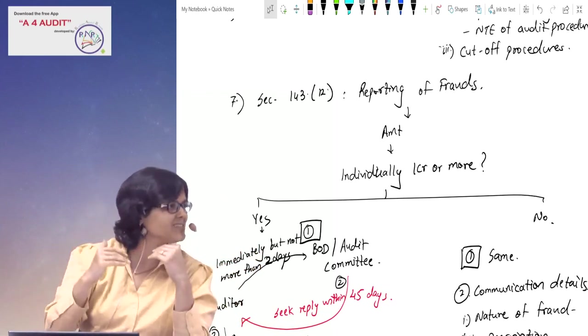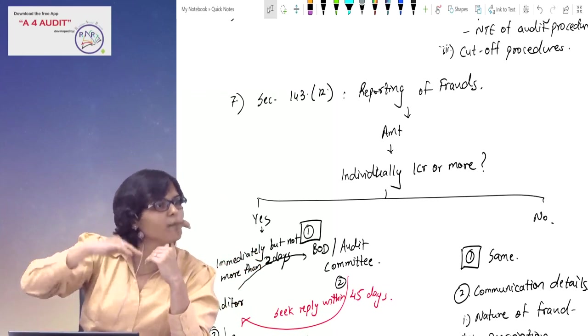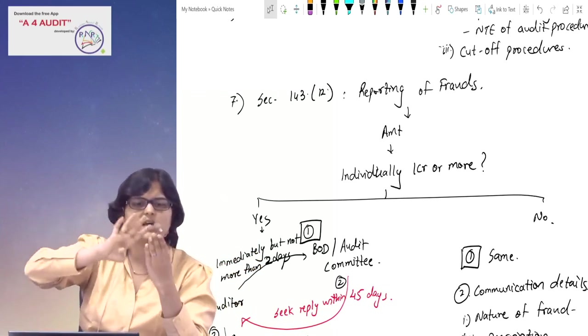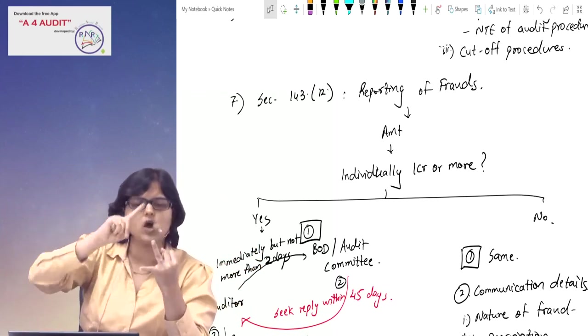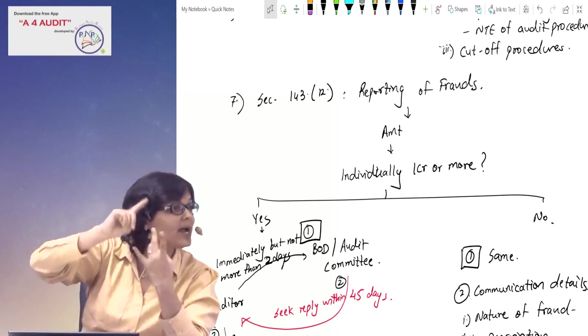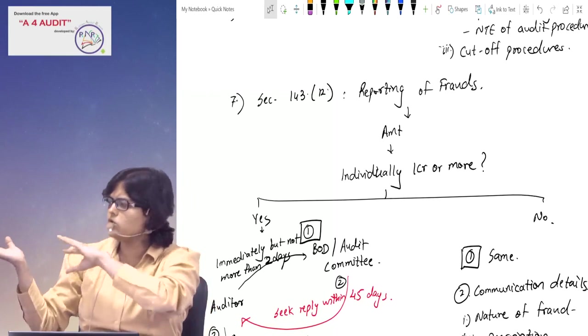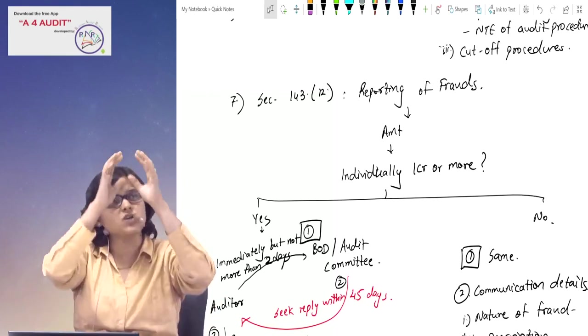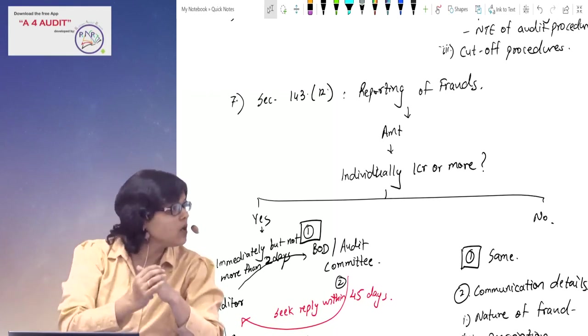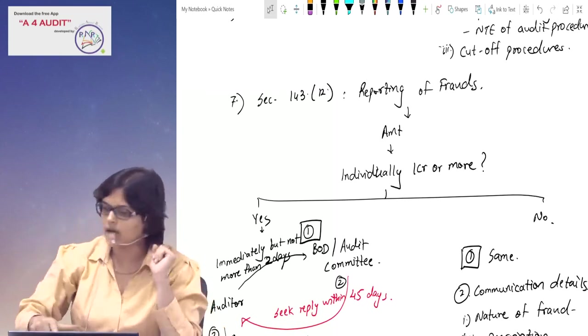After that, if it is less than one crore, who to tell? Just board or audit committee. What four things to tell? Nature of fraud, amount of fraud, parties involved, and description of the fraud. Then board will incorporate it in the report along with remedial action taken.